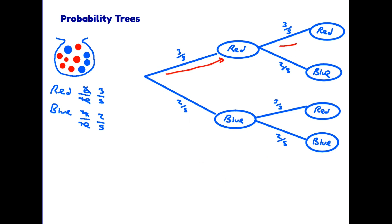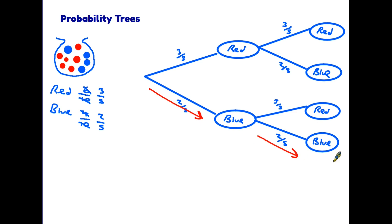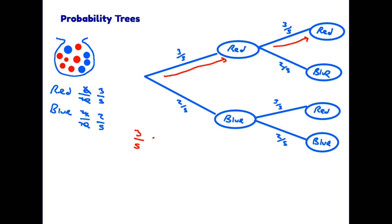The tree covers all possibilities: red-red, red-blue, blue-red, and blue-blue. To find the probability of drawing two red counters in a row, we look at the probabilities on those two branches and multiply them. Three fifths times three fifths gives nine over twenty-five. So nine out of twenty-five is the probability of drawing two red counters in a row.